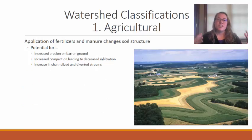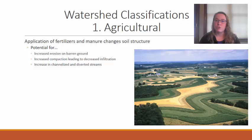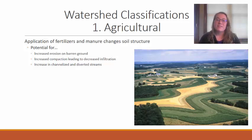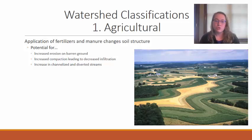There are several different classifications of watersheds. The first is an agricultural dominated watershed. These have potential for increased erosion if there is more barren ground or exposed soil. There's also an increased chance of compaction from heavy equipment moving across the soil, which decreases the amount of infiltration — the amount of water that can seep into the soil. Additionally, in high agricultural areas, streams tend to be more channelized, meaning humans dig drainage ditches to direct water away from crops.